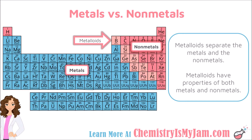Another way that the periodic table is arranged is by metals and nonmetals, and this periodic table has been color coded for you. These elements are called the metalloids — they have properties of both metals and nonmetals. Everything to the left of the metalloids is a metal, with the exception of hydrogen. Hydrogen is a nonmetal. All of the other nonmetals are to the right of the metalloids. The majority of the elements on the periodic table are considered metals.